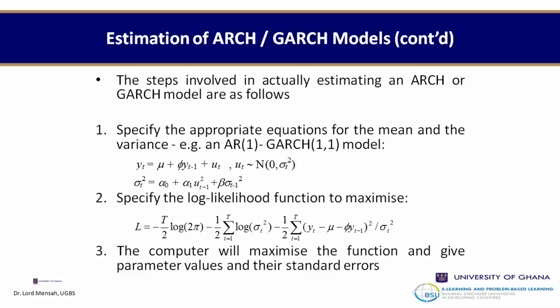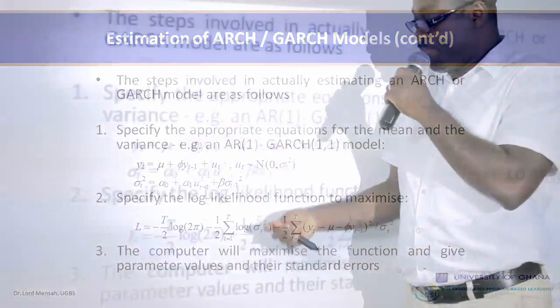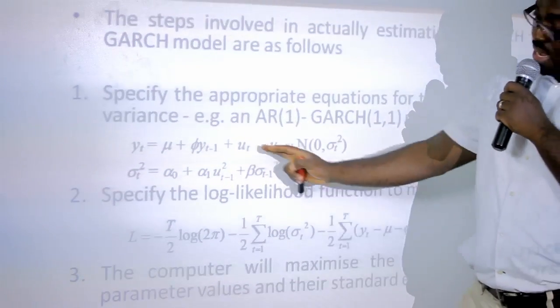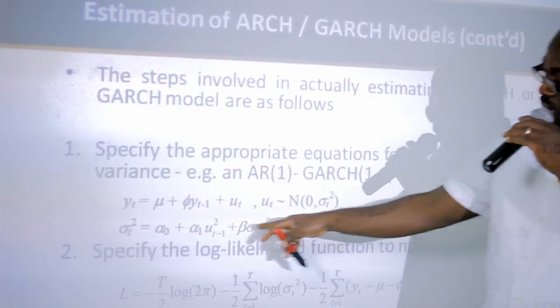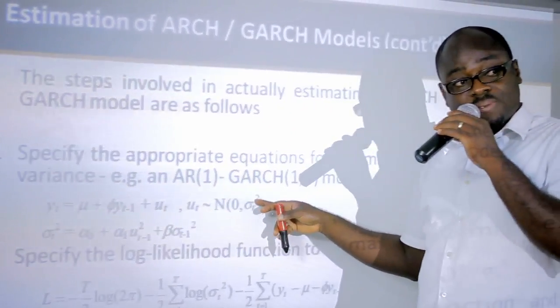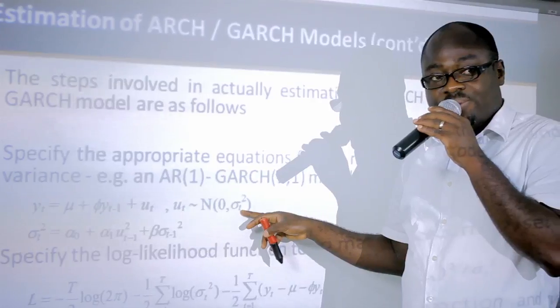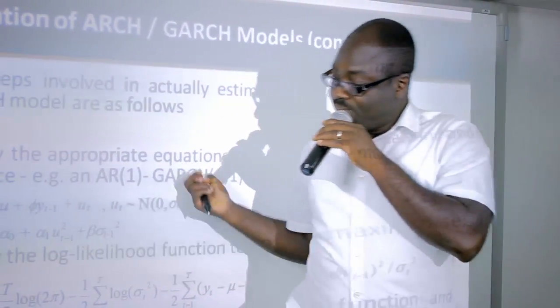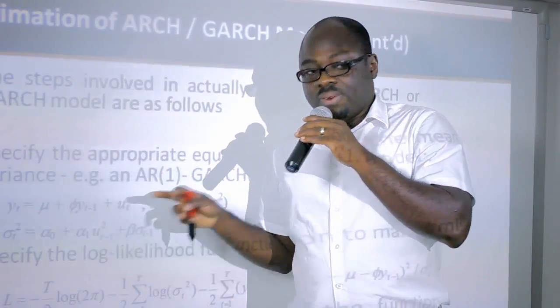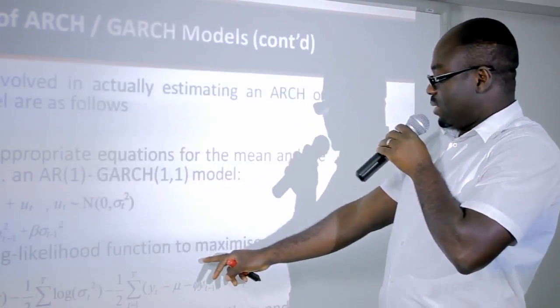The steps for estimating an ARCH or GARCH model are: first, specify the appropriate equation for the mean and variance. We assume Y_t has a process evolving around its mean as an AR(1) with some error term. This error term is not constant — it varies. The dynamic of that variation is captured using GARCH(1,1), where the variance depends on its lag and the lag of the residuals.